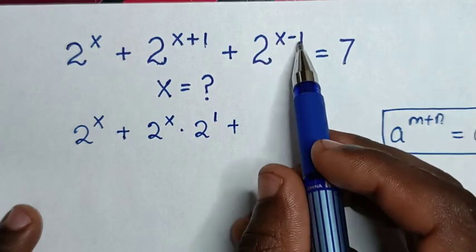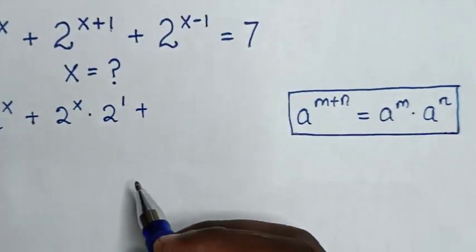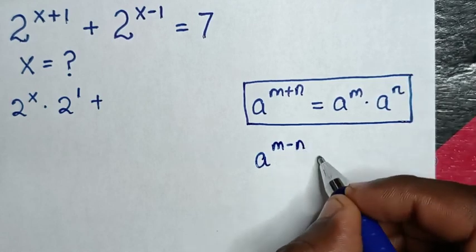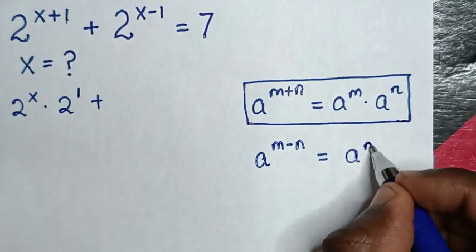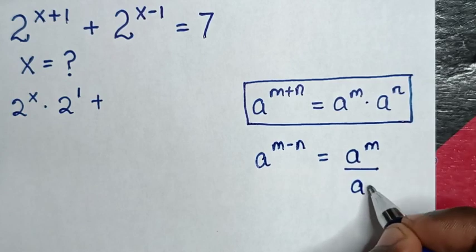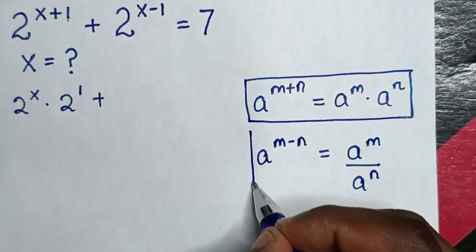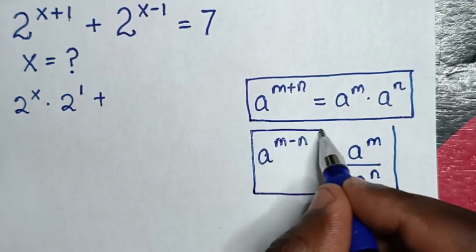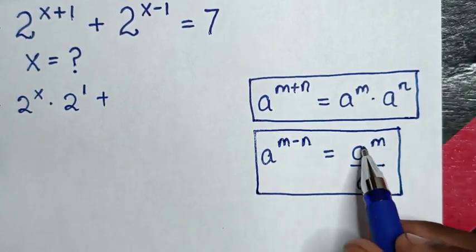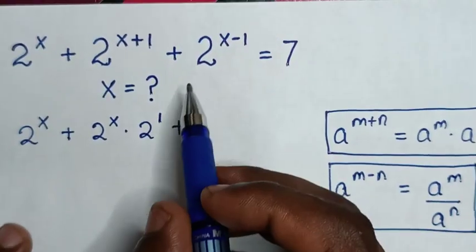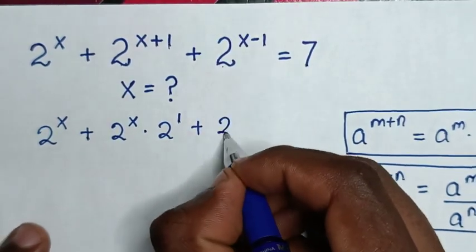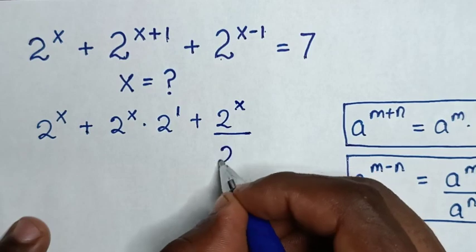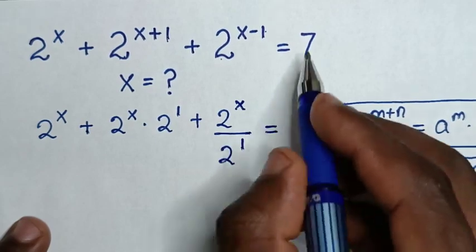For 2 power of x minus 1, we apply the exponential rule that a power of m minus n is equal to a power of m over a power of n. So it will be division of exponents, which is 2 power of x over 2 power of 1, which is equal to 7.